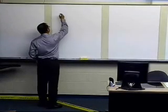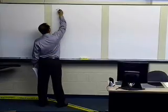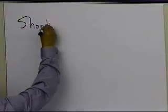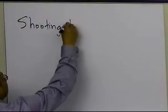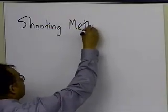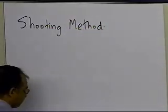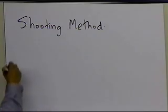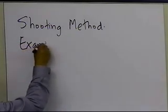In this segment, we're going to take an example of the shooting method. We're going to take a second-order differential equation, but it's a boundary value problem, and try to figure out how we can use the shooting method to solve this particular problem.